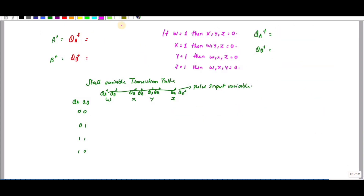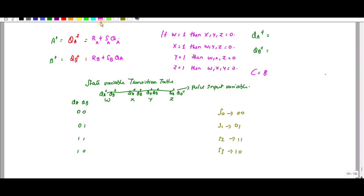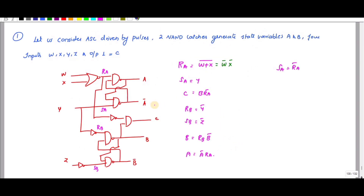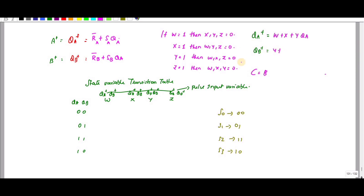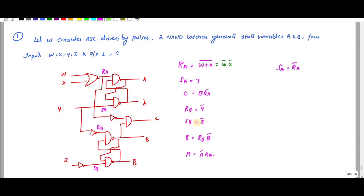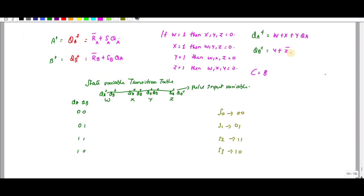I am going to substitute into this equation. QA plus equals RA bar plus SA into QA. RA bar equals (W plus X) bar, and SA equals Y, so QA plus equals (W plus X) bar plus Y into QA. QB plus equals RB bar plus SB into QB, where RB bar is (Y plus something) bar and SB equals Z, so QB plus equals RB bar plus Z into QB.